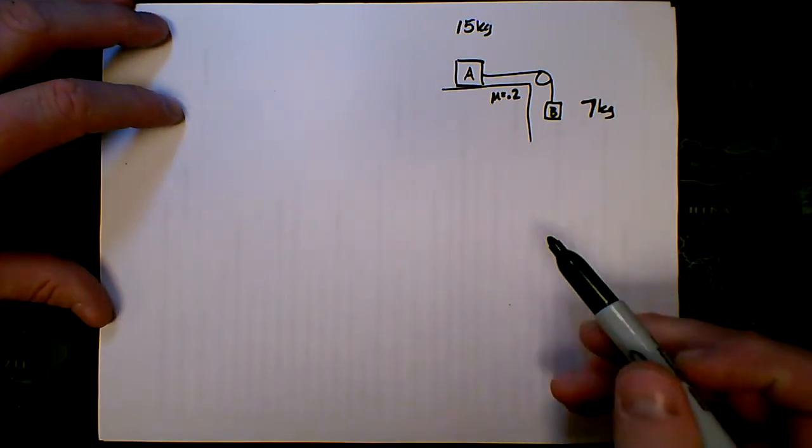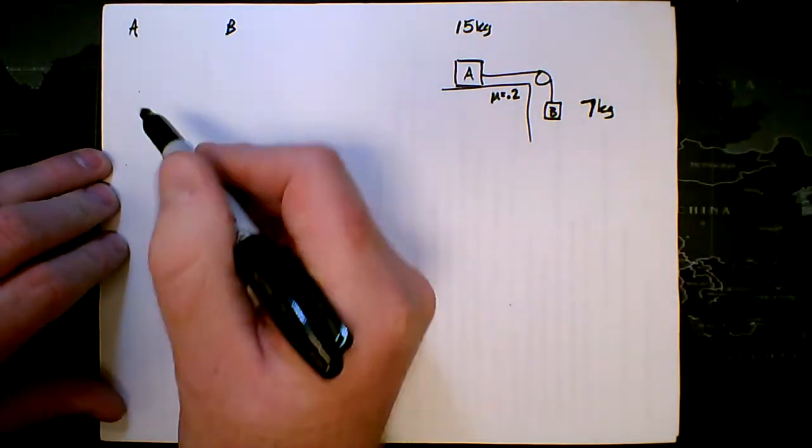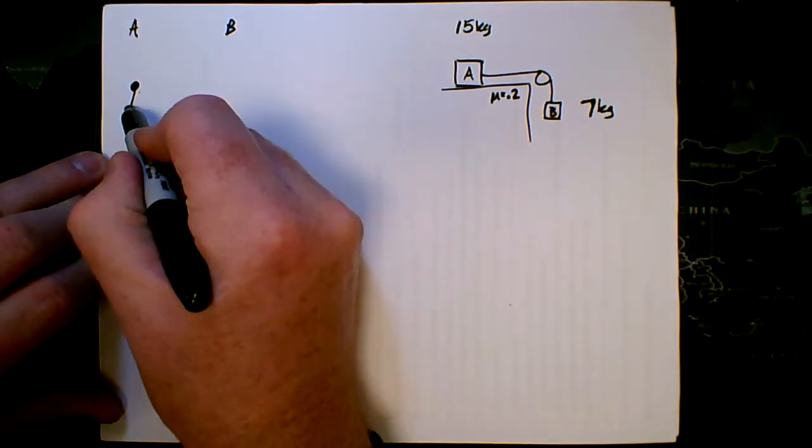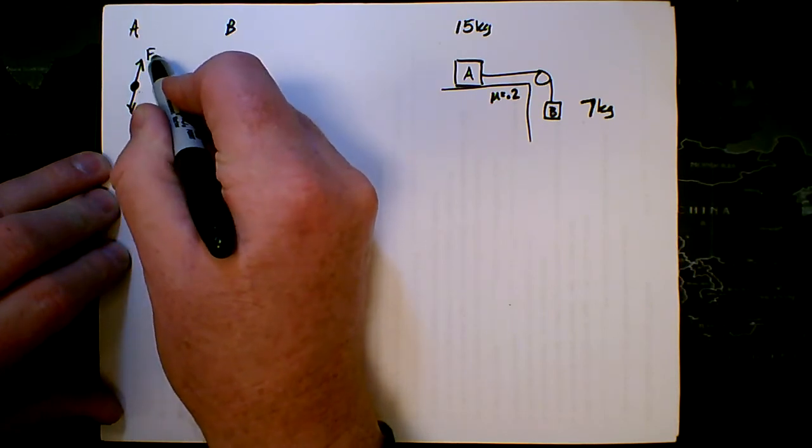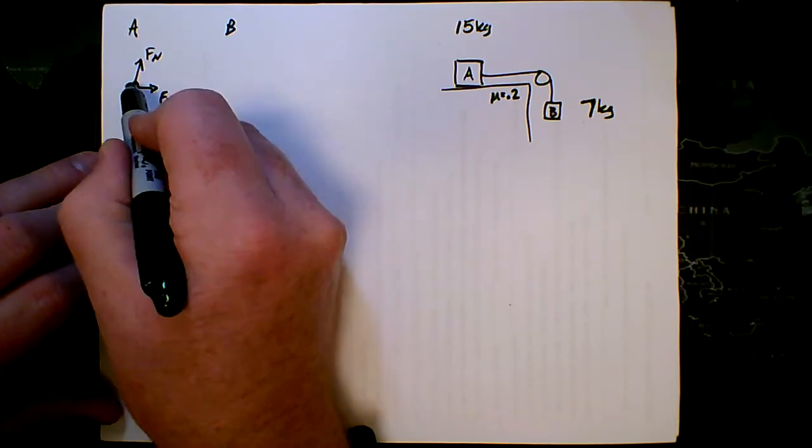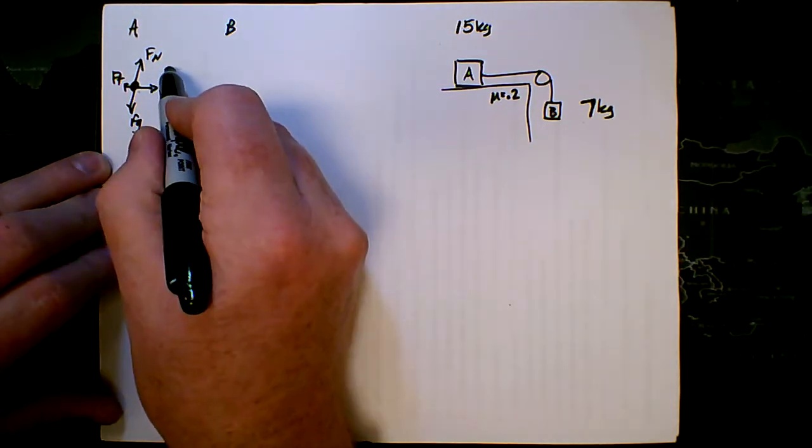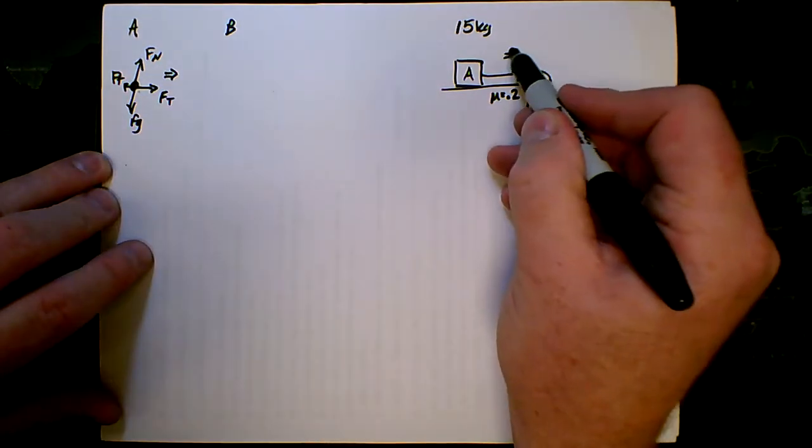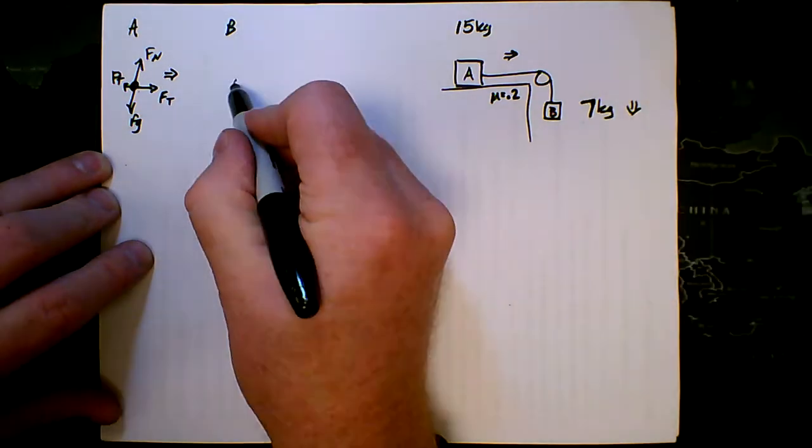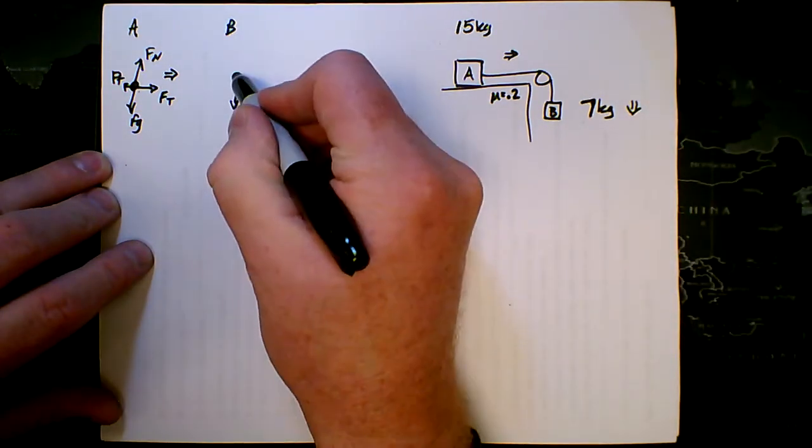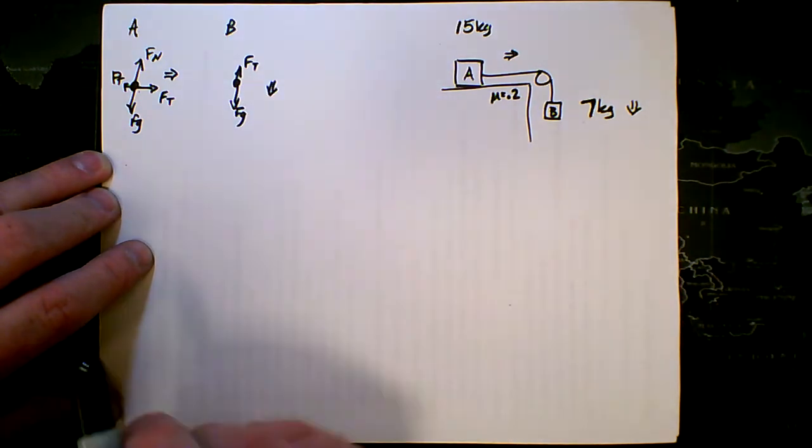If we do the split system approach, we're going to look at block A and B separately. So for block A, we've got force of gravity, normal force, tension to the right, and friction to the left. Block A accelerates to the right, block B is going to accelerate downward. So for block B, force of gravity, force of tension, and it's accelerating downward.